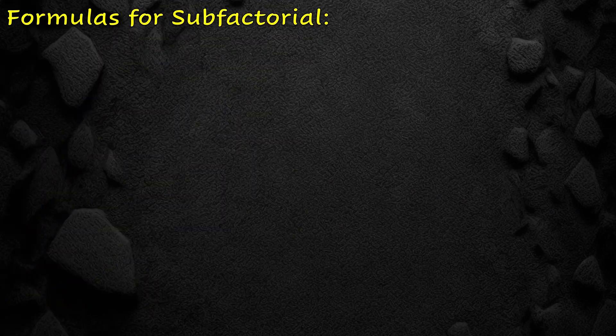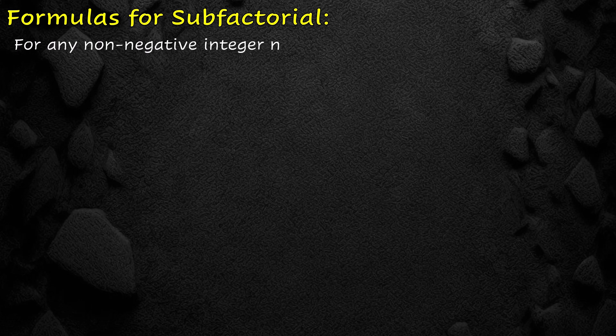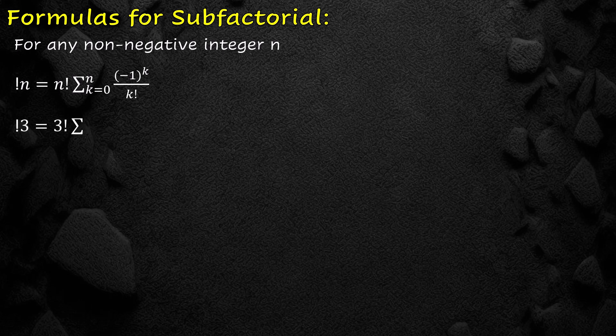Now we discuss the first formula for sub-factorial. This formula works for all non-negative integers. For any non-negative integer n, sub-factorial of n can be written as n factorial into summation k from 0 to n of minus 1 raised to power k over k factorial. We find the sub-factorial of 3: sub-factorial of 3 is equal to 3 factorial into summation k from 0 to 3 of minus 1 raised to power k over k factorial.